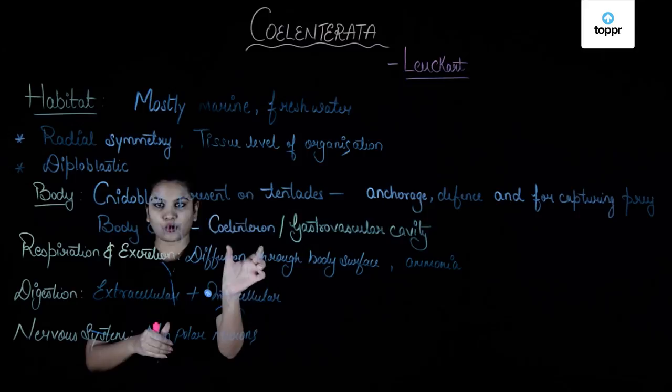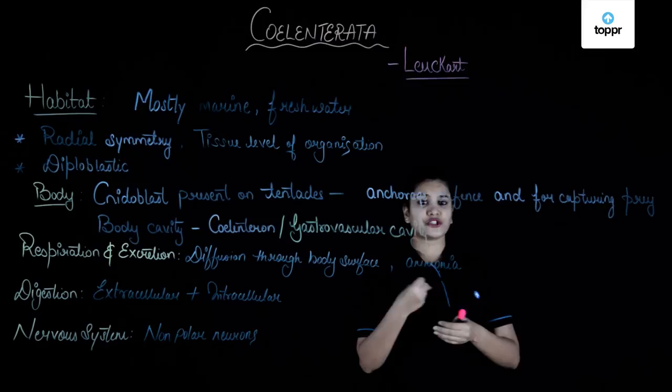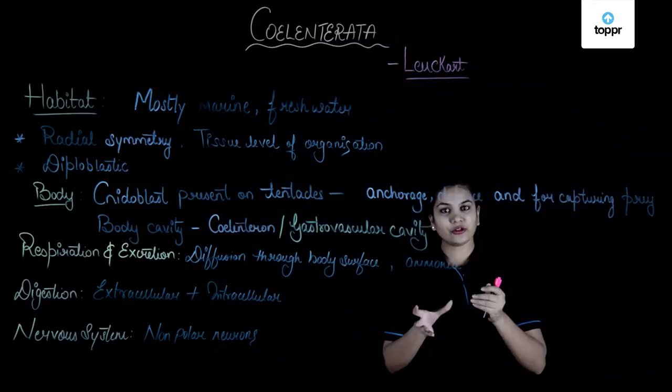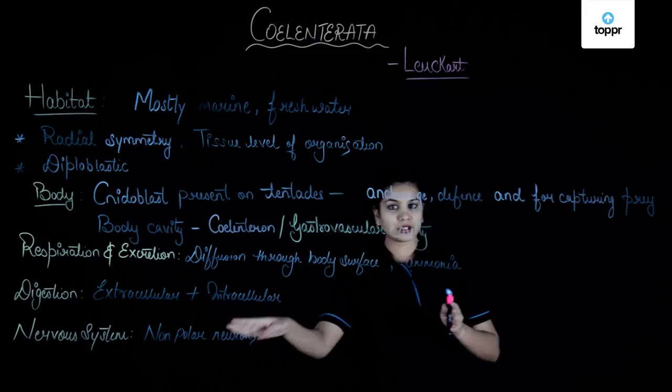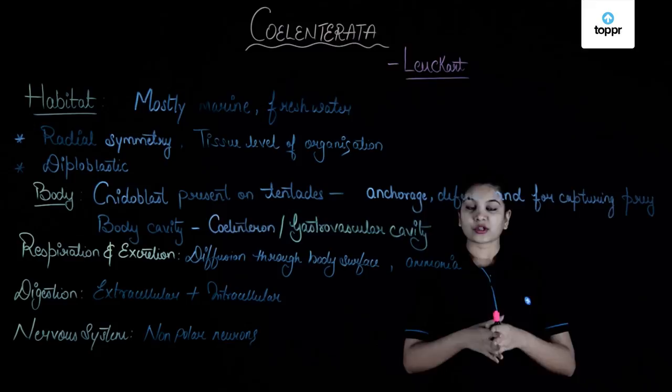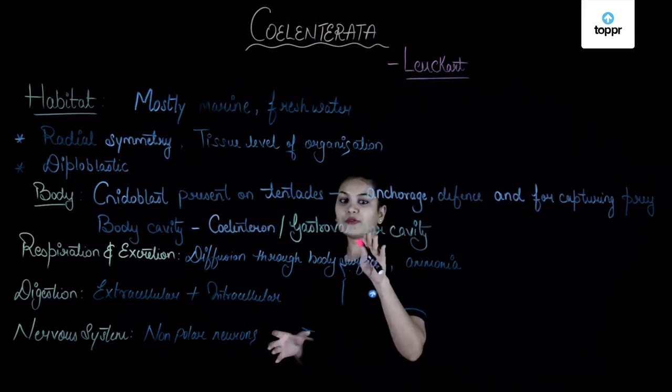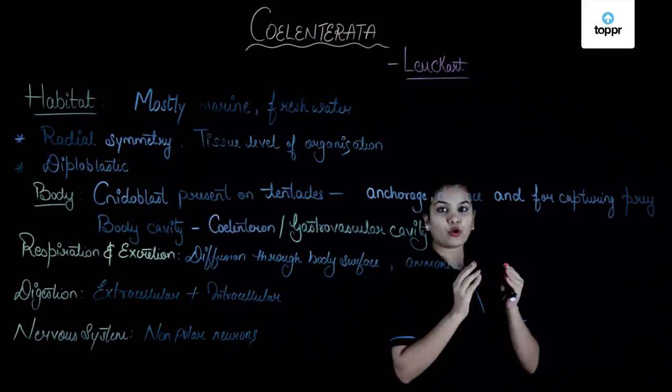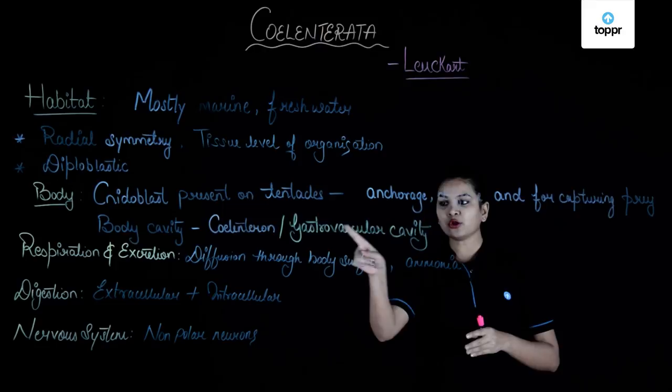Their body cavity is called the coelenteron, and this is a place where digestion takes place. Digestion is both intracellular as well as extracellular — some digestion takes place inside the coelenteron and some in the vacuoles of the gastrodermal cells. Because of this, we call this body cavity the gastrovascular cavity, since its function is to partly digest the food and also to distribute it in the body.